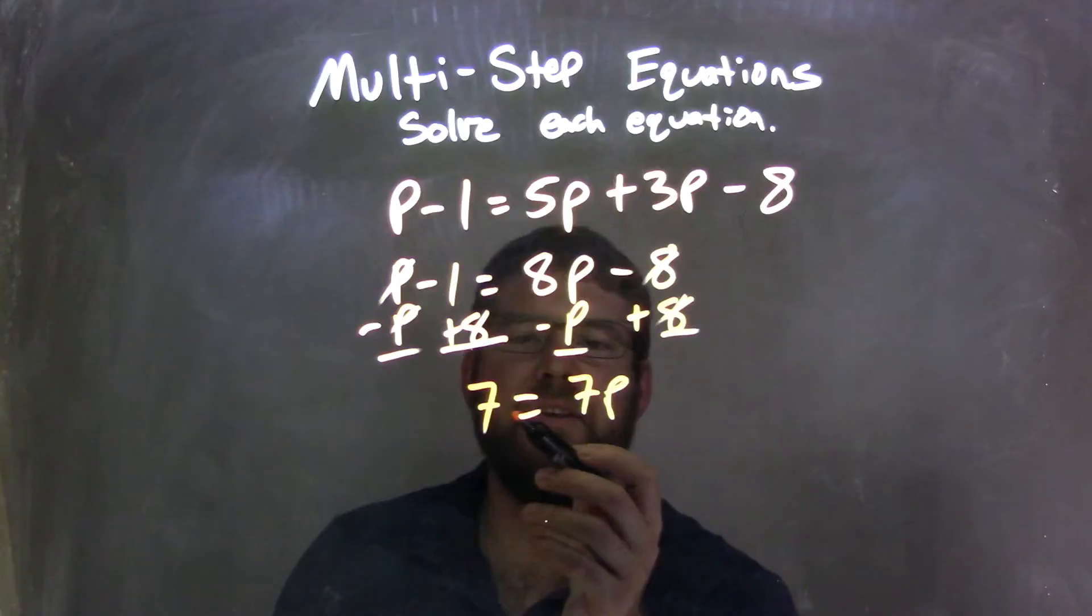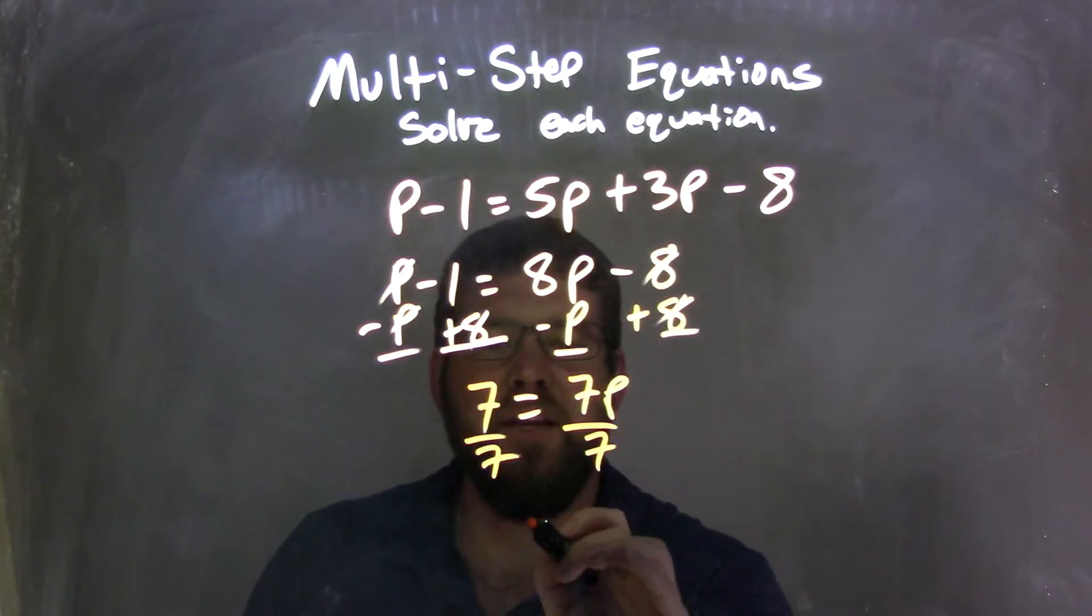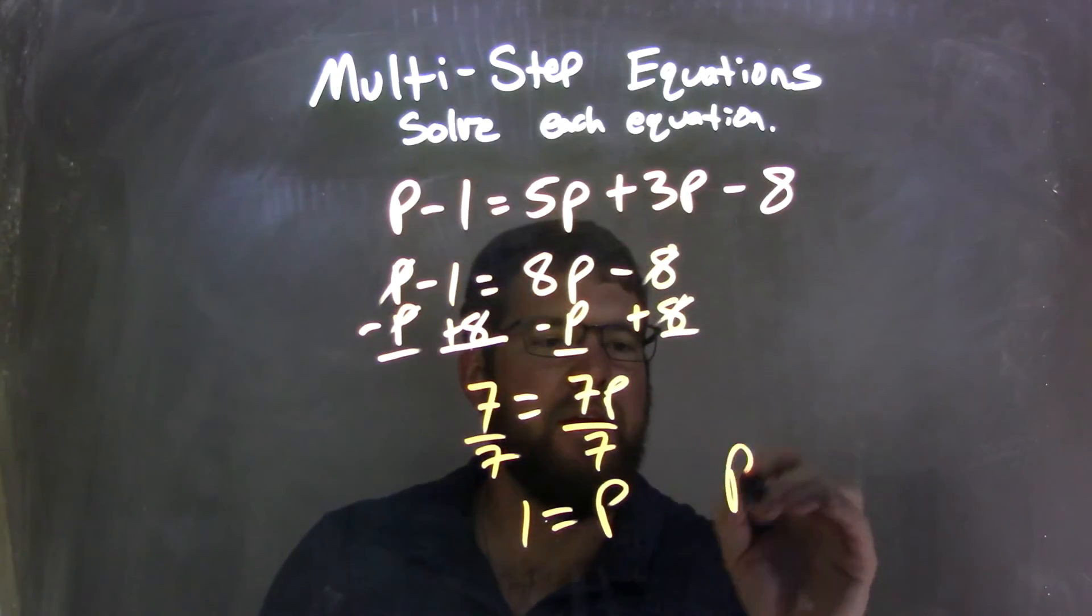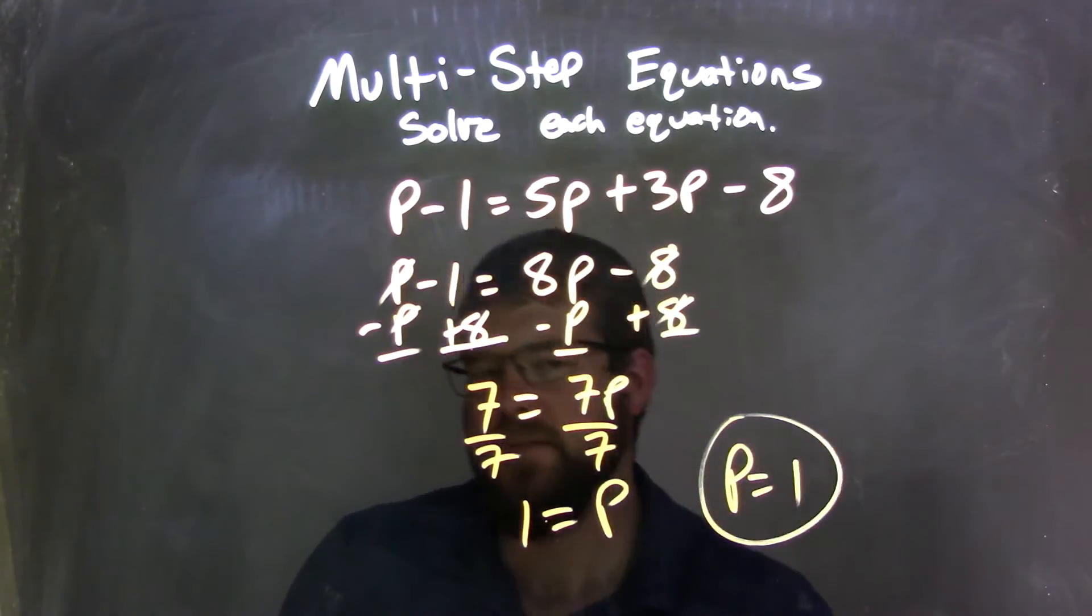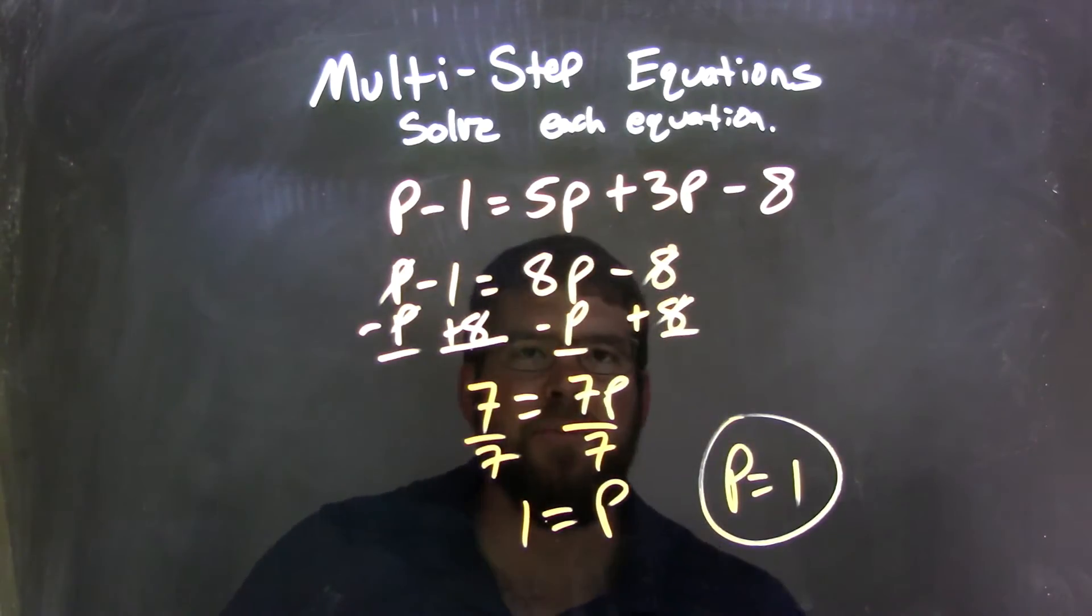So now we have 7 equals 7p. Well, if I divide by 7, I can cancel out that 7, leaving me with just 1 equals the letter p. And I can rewrite nice and neat. p equals 1. The letter first equals the number. And that's our final answer. Pretty simple.